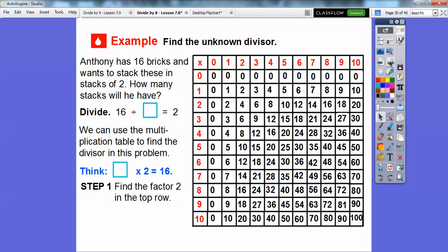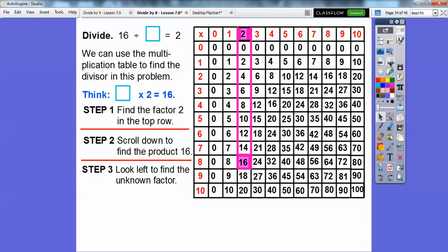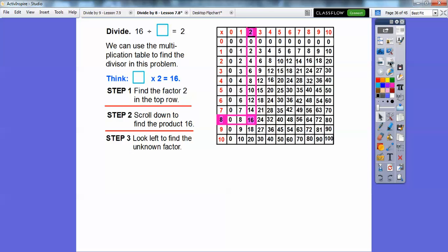So step 1 is to find the factor of 2. So here's the factor of 2 right here. So we'll use that one right here. And then we scroll down to find the product 16. So what times 2 equals 16? So scroll down to the 16 down there. So there it is right there. And then now we just scroll over and look to the left to find the unknown factor. And so it's going to be that 8 right there. So the unknown factor is 8.